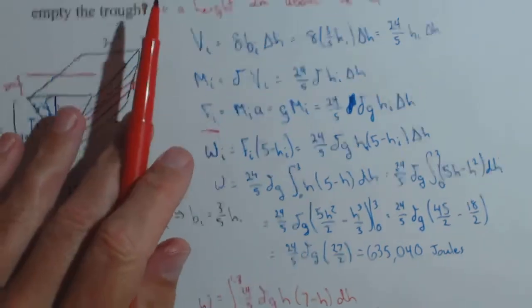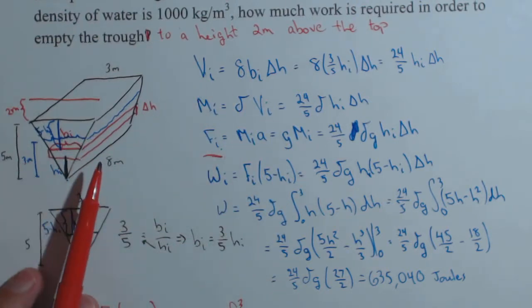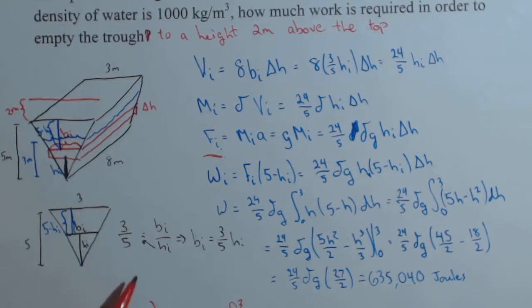So this is one variation that you might see on this kind of problem is raising it to a level that's above the top of your tank. It only makes a small effect in setting up the work for the i-th slice. Everything else was pretty much the same.